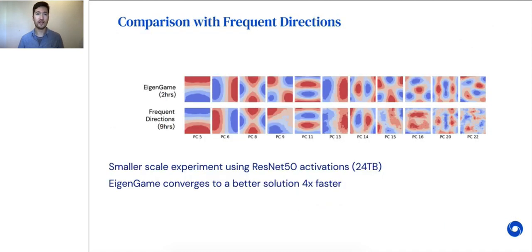We also compared eigengame against frequent directions, a sketching technique. We ran a scaled-down version of our ResNet experiment and found that eigengame recovered better solutions over four times faster.